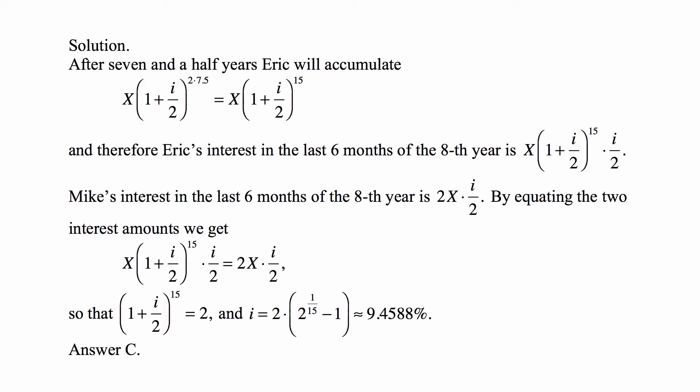Well, I over 2 cancels, X cancels, so (1 plus I over 2) to the fifteenth is 2. We take both sides to the power of 1 over 15. We get 2 to the 1 over 15 equals 1 plus I over 2, so that I is equal to 2 times (2 to the 1 fifteenth minus 1), and that we calculated to be approximately 9.4588, and that's answer C.